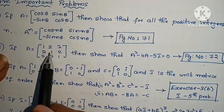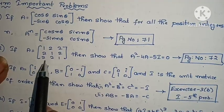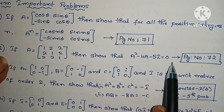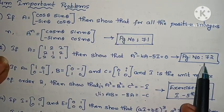Second one: if A equals to [1, 2; 2, 1] to [2, 1], then show that A² - 4A - 5I = 0. The page number 72.